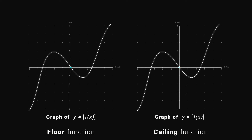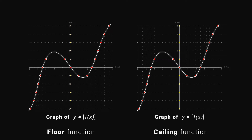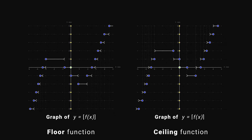Drawing the ceiling function and drawing the floor function follow the same process. When we draw the floor function, we draw vertical dotted lines facing downward. But for the ceiling function, we draw vertical dotted lines facing upward, and then draw the horizontal line segments.